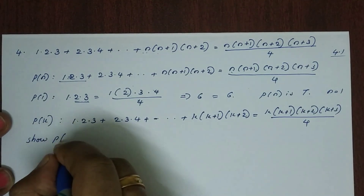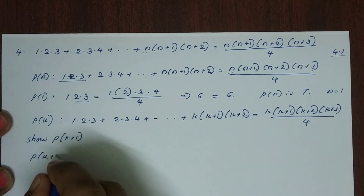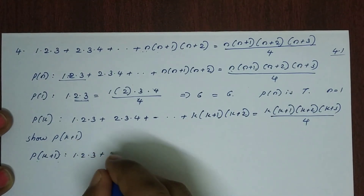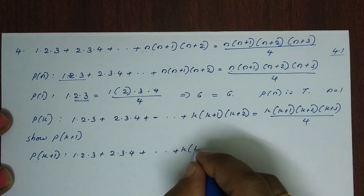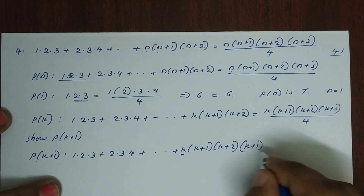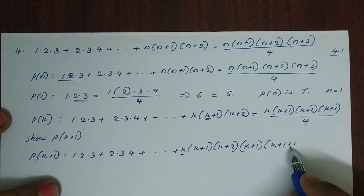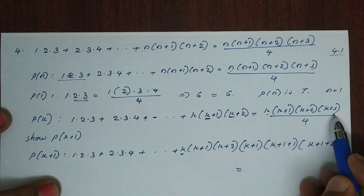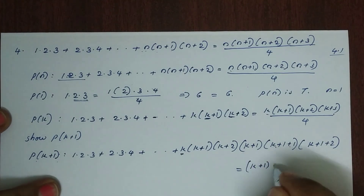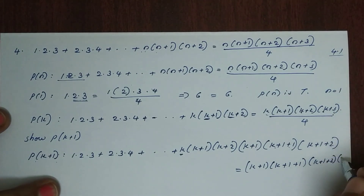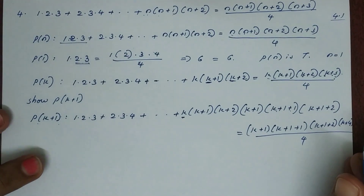Show that P of k plus 1 is true. P of k plus 1 is: 1 into 3 plus 2 into 3 into 4, plus etc., plus k into k plus 1 into k plus 2, plus k plus 1 into k plus 2 into k plus 3, which equals k plus 1 into k plus 2 into k plus 3 into k plus 4, all divided by 4.